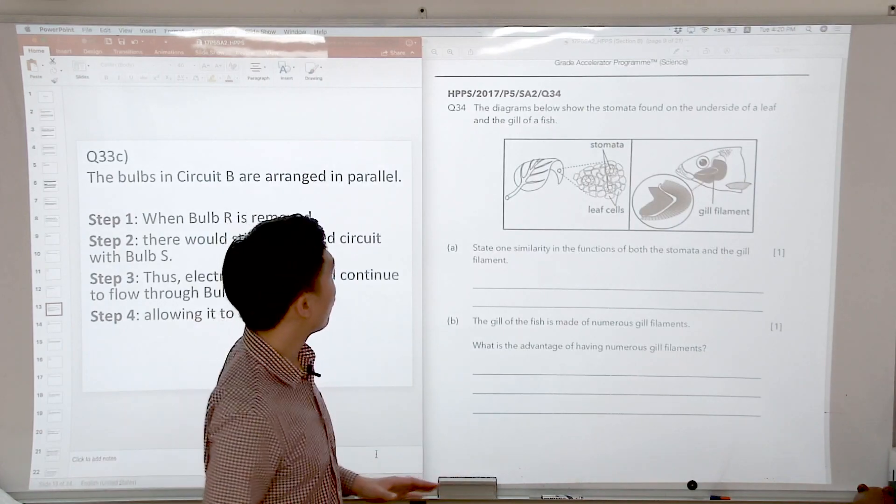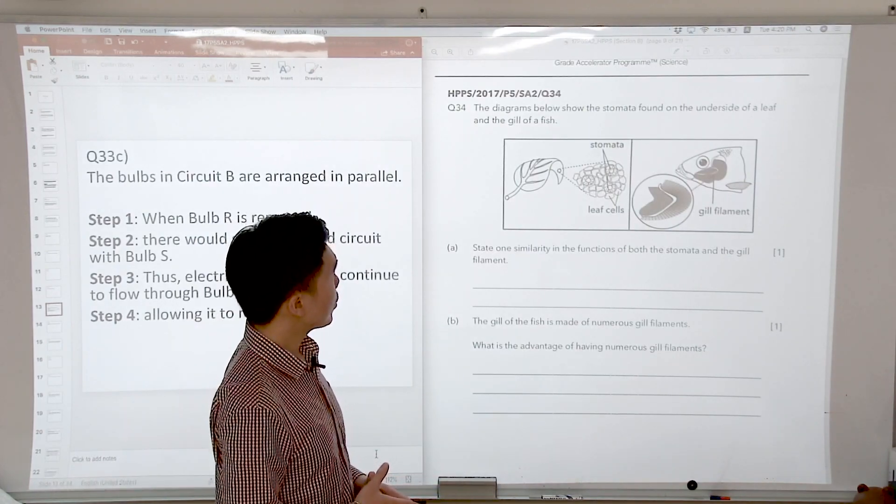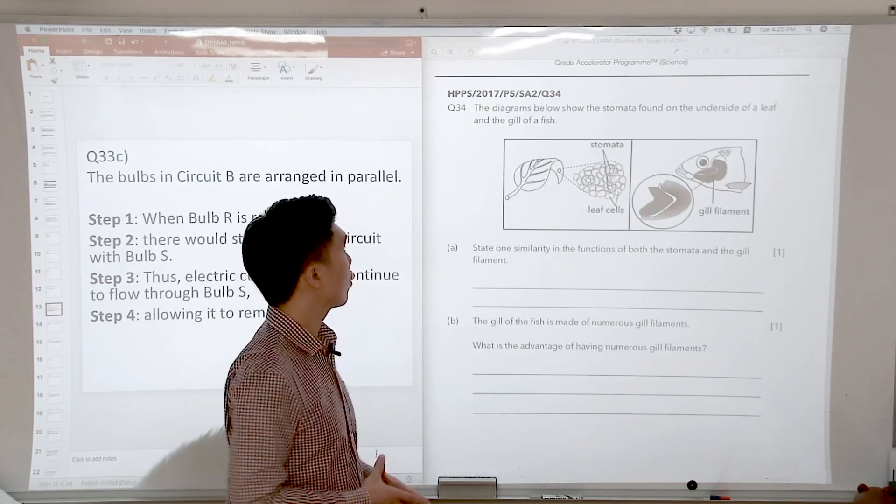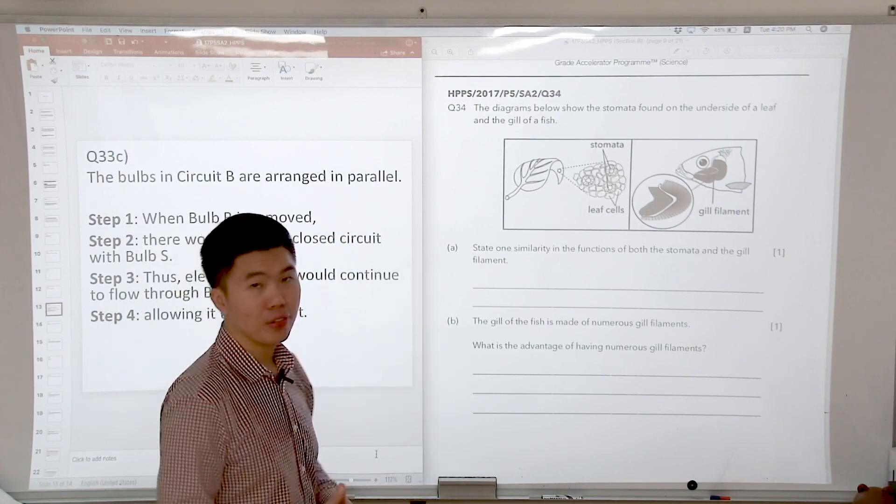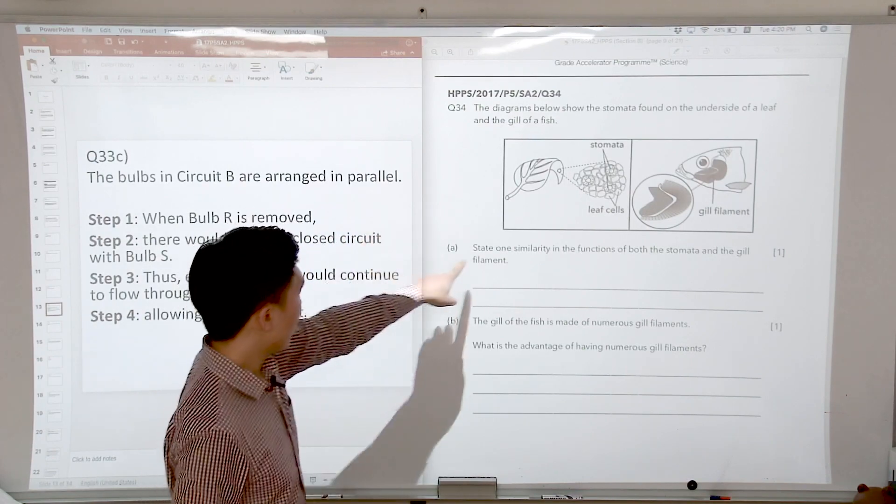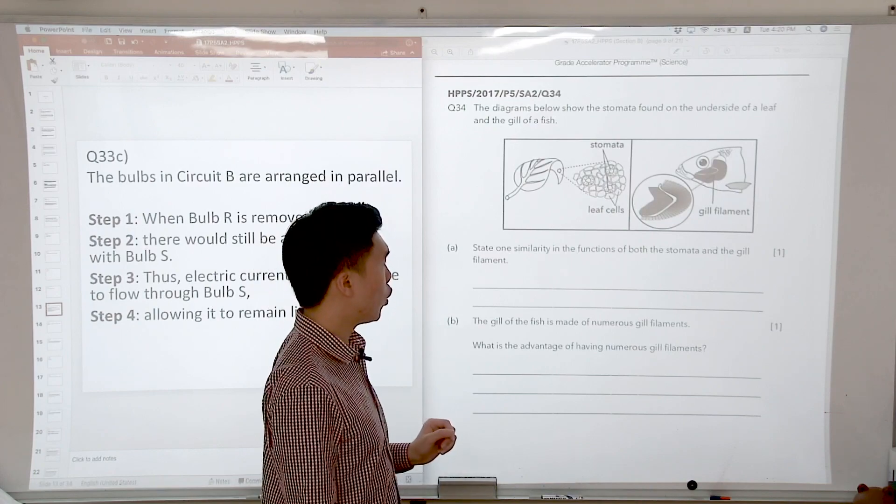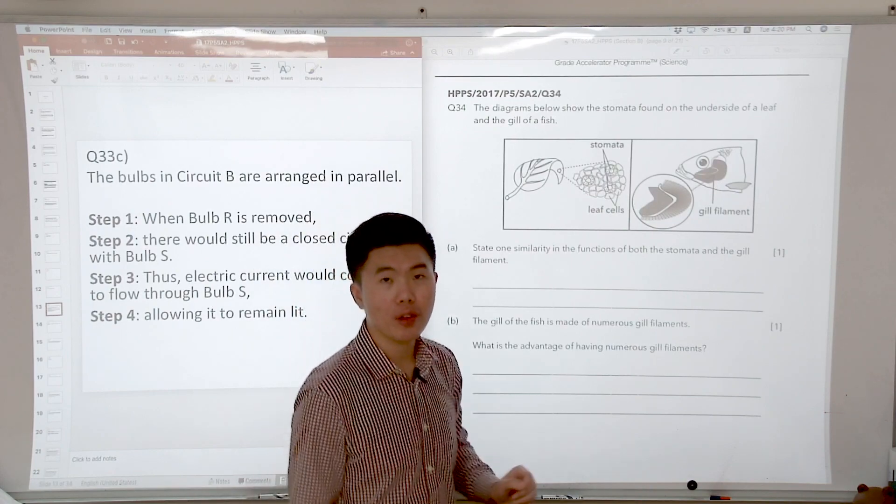So let's look at question 34. The diagram below shows the stomata found on the underside of the leaf and the gill of a fish. Let's look at part A. State one similarity in the functions of both the stomata and the gill filament.